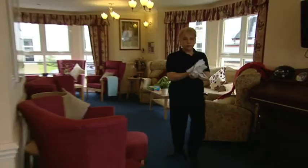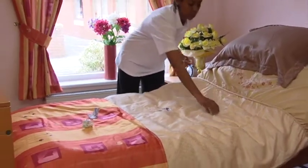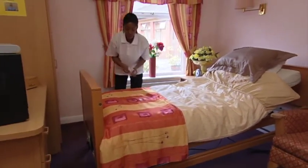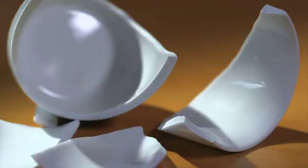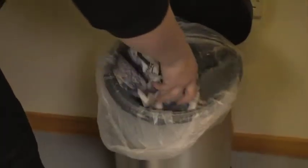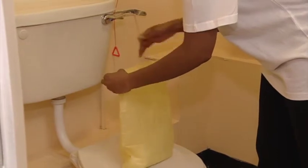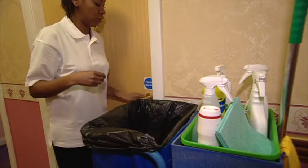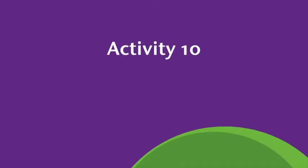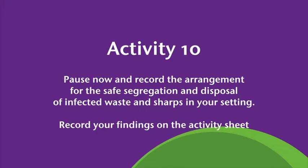By waste, we mean everything from household waste to incontinence pads. The safe management of all waste by those involved in the handling, transporting and processing of it is an essential part of health and safety and general good hygiene. Your setting may use different coloured bags to manage waste appropriately. Some waste will be recyclable such as broken crockery, cardboard and paper. Other waste like household waste can be disposed of through routine domestic waste systems. However, other waste may need to be segregated as hazardous or special waste and placed in the correct coloured waste bags. All waste should be binned as soon as possible and bags should not be over full – only three quarters full. When handling waste soiled with body fluids, always wear disposable gloves and an apron and place it in the correctly coloured waste bag. Activity 10: Pause now and record the arrangement for the safe segregation and disposal of infected waste and sharps, then record your findings on the activity sheet.